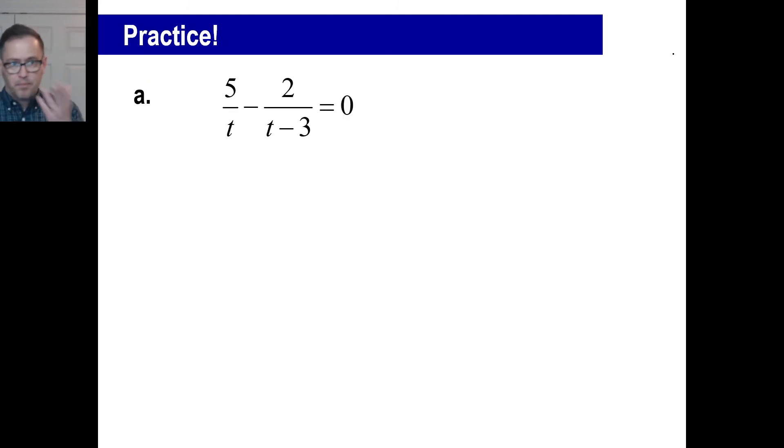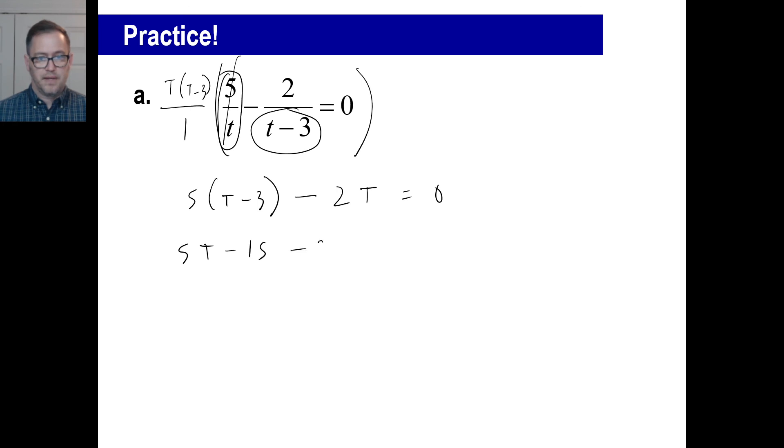Okay. Alright. We got two practice problems. So pause it and try practice problem A. Okay. Okay. Let's try it. t times t minus 3 is your common denominator. Let's do this one first. The t's cancel. You have 5 times t minus 3 minus 2 times. And then this time the t minus 3s cancel. So you have t times 2, which is 2t. Then this just ends up being 0 times whatever. Okay. So 5t minus 15 minus 2t equals 0. 5t minus 2t is 3t. I move this over. It becomes 15. And t is equal to 15 divided by 3. There we go.